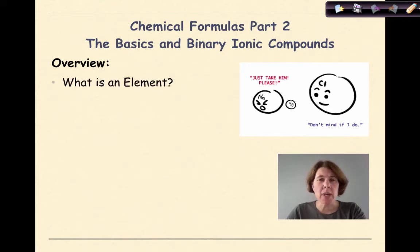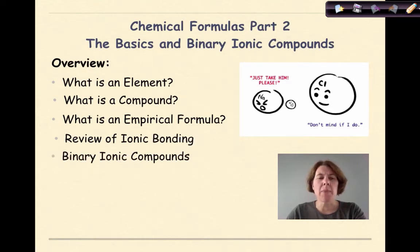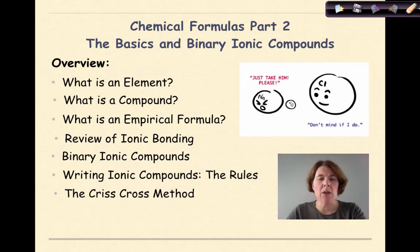So the first thing that we're going to look at is redefine what is an element, talk about what is a compound, look at empirical formulas, have a tiny review of ionic bonding, looking at binary ionic compounds finally, writing ionic compounds, the rules that we have to follow, and finally summing it up with a little shortcut method called the crisscross method.